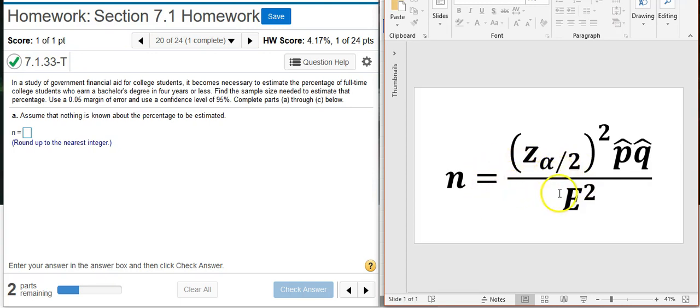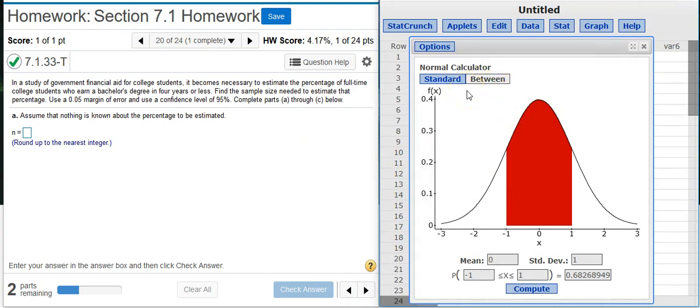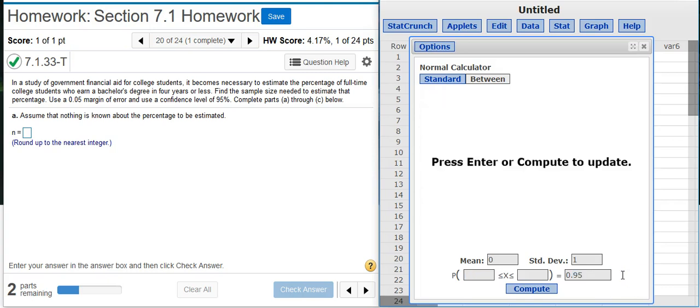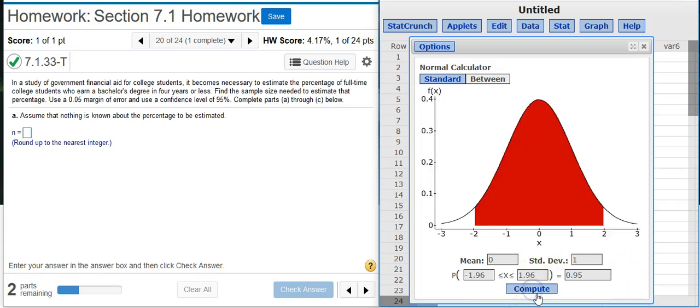I've got alpha split between two tails, so I want to use that between option in StatCrunch. This option gives us the percentage of the total area that is between the boundaries here, between the tails. So in this case, that's going to be equal to the confidence level that we want. So I'm going to come down here and replace this with my 95% confidence level. And now when I hit Compute, the z-scores that come out, which is the boundaries on these tails, this is the z-score that I need.